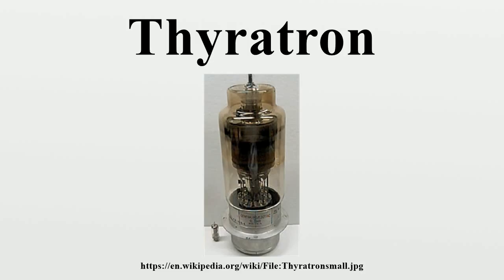In the 1920s, thyrotrons were derived from early vacuum tubes such as the UV-200, which contained a small amount of argon gas to increase its sensitivity as a radio signal detector, and the German LRS relay tube, which also contained argon gas. Gas rectifiers, which predated vacuum tubes, such as the argon-filled General Electric Tungar bulb and the Cooper-Hewitt mercury pool rectifier, also provided an influence.